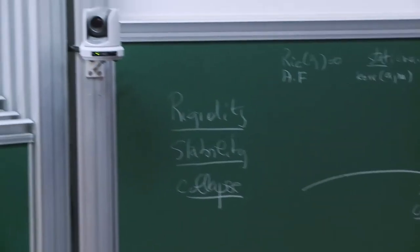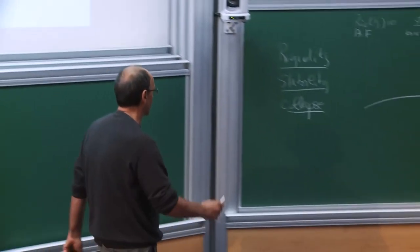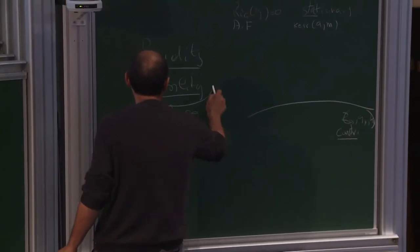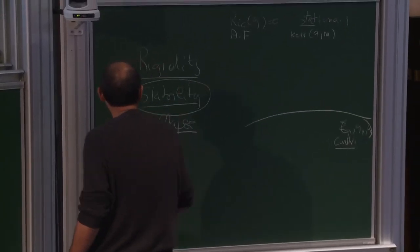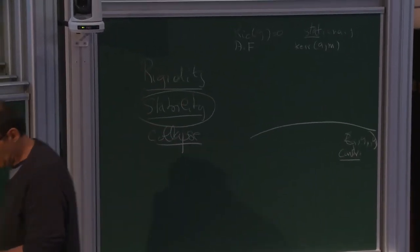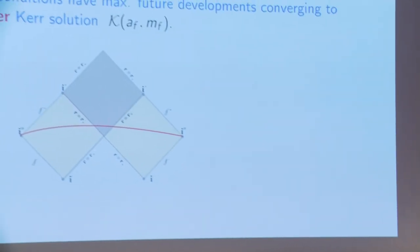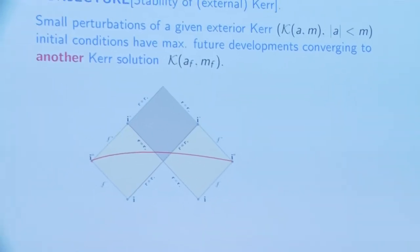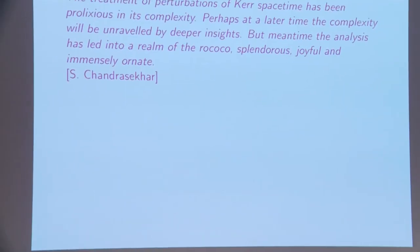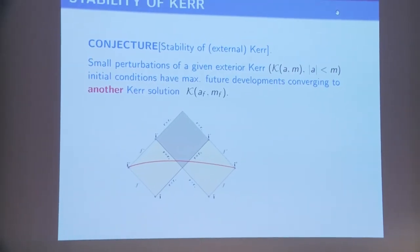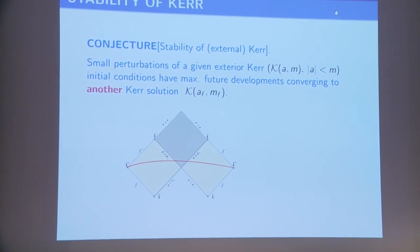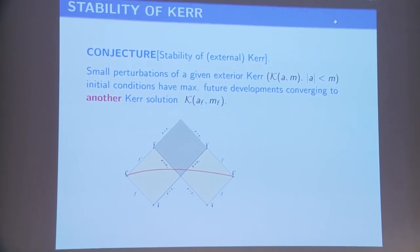I talked a little bit about rigidity, and now we are talking about stability. This is a conjecture: stability of the external Kerr.